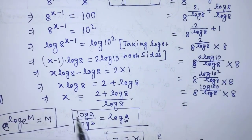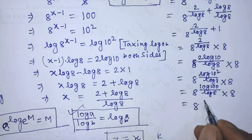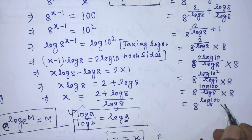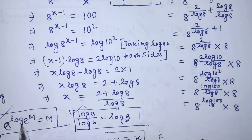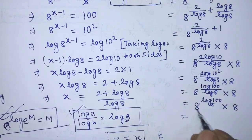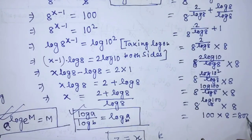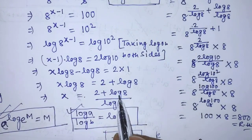According to the change of base formula, we write 8 to the power log of 100 to the base 8, times 8. We now apply the formula: a to the power log base a of m is equal to m. According to this formula, we get 100 times 8, which is 800. So the left hand side equals the right hand side, confirming that the value of x equal to (2 plus log of 8) over log of 8 is the correct answer.